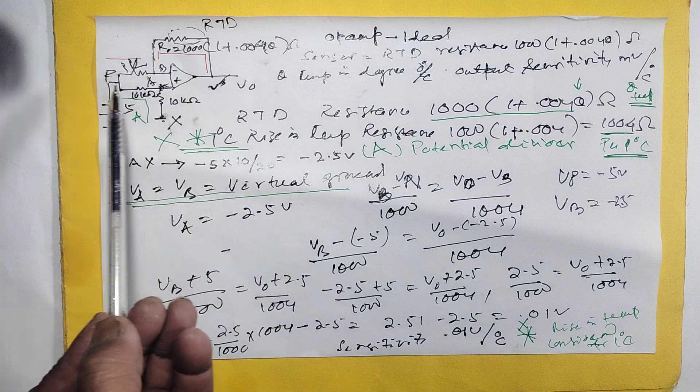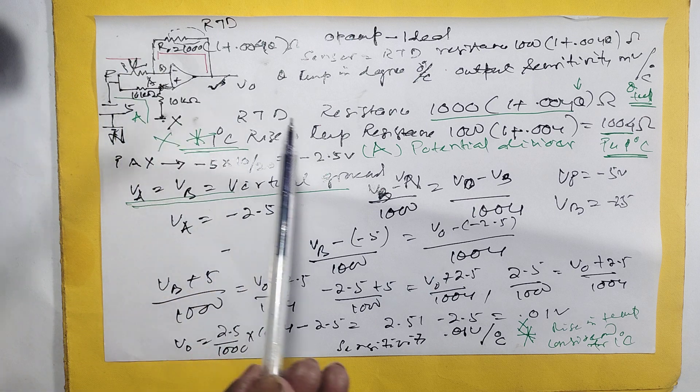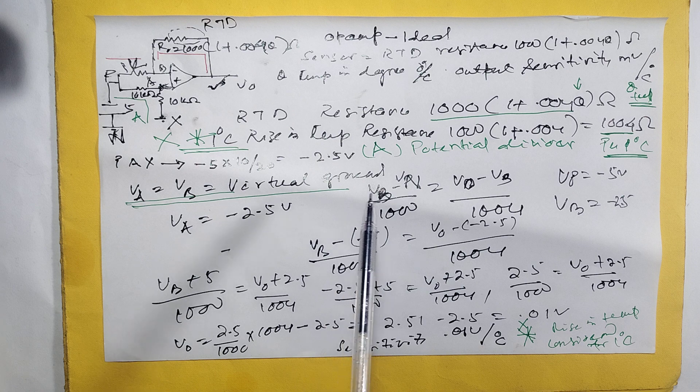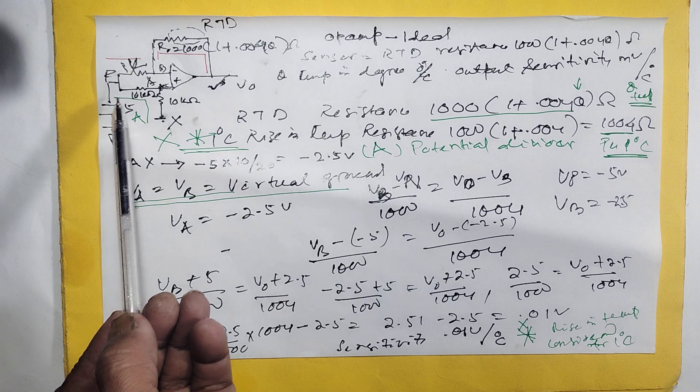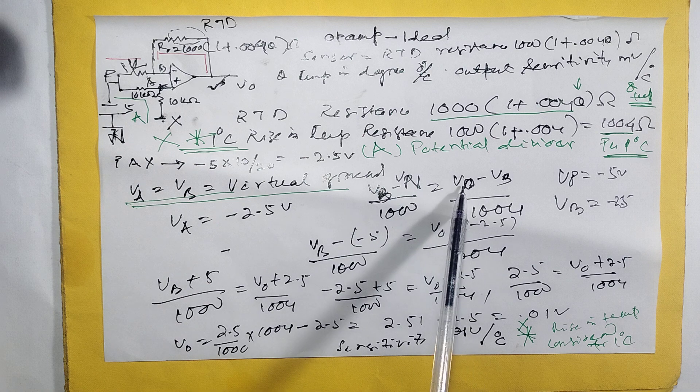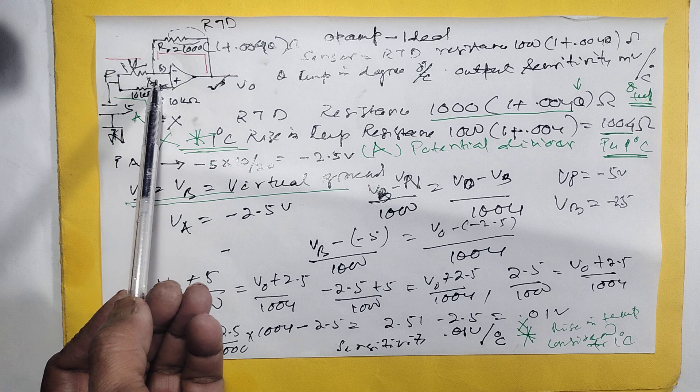It is 1000. It is potential divided by minus 2.5. So automatically this is the circuit. This is the calculation. VB minus VN minus VUO minus VB by 1004. This is the general standard equation of this circuit.